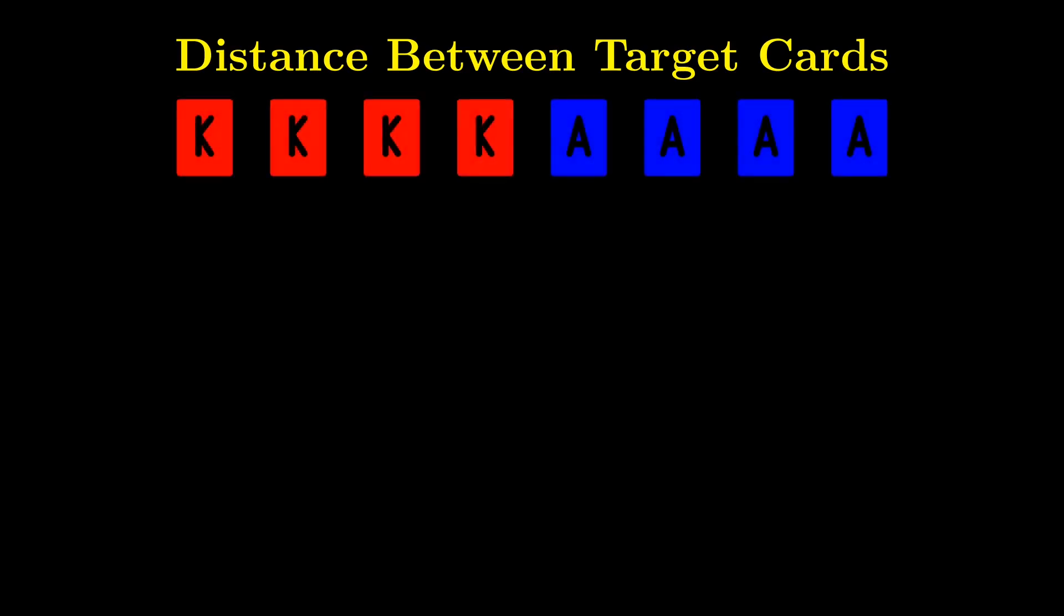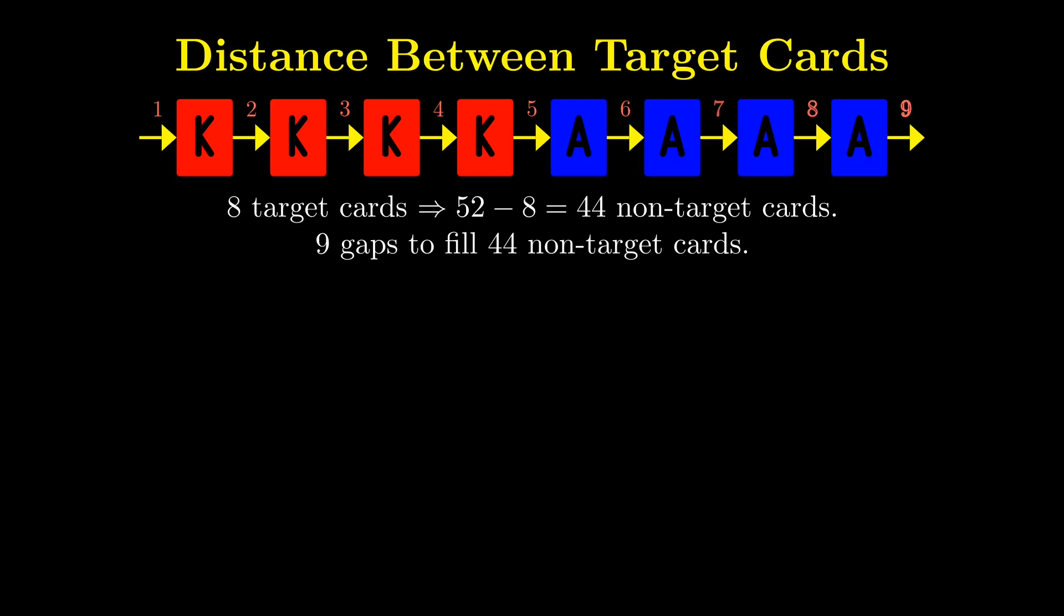After getting the table, it's time to consider the distance between the target cards. There are 8 target cards, which means there are 44 non-target cards. There are 9 gaps to fill 44 non-target cards, as shown by the arrows, so the average distance is 44 over 9.